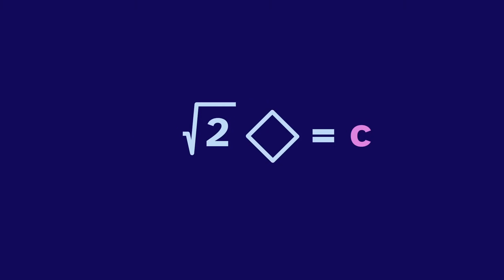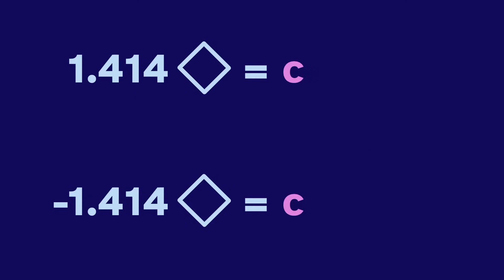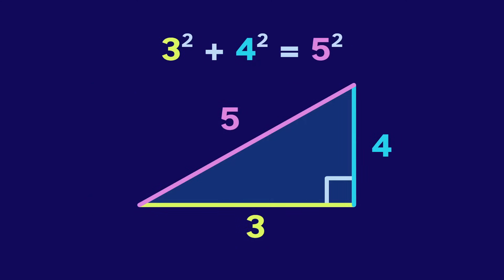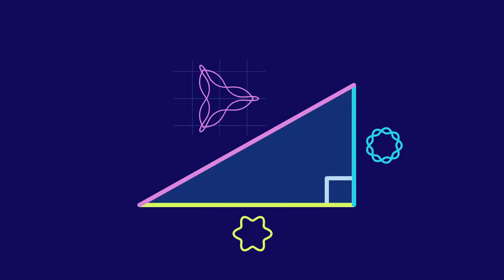But root 2 has two values, one positive and one negative. So we end up with two results. Going back to this example, we got 5 as the hypotenuse, but negative 5 is also a valid answer. The hypotenuse will always be some shape and its negative.